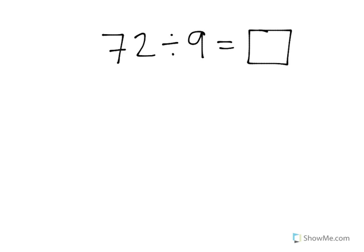In this video, we're going to look at how to represent a division problem using visual help. We have the division problem 72 divided by 9. That means that we're starting with 72, and we're going to divide it into 9 equal groups.